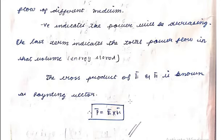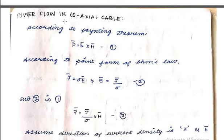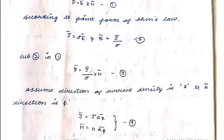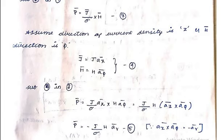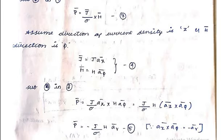The cross product E × H is known as the Poynting vector. The next topic related to Poynting's Theorem is power flow in a coaxial cable. According to Poynting's Theorem, P = E × H. To express E in terms of current density, we use the point form of Ohm's law: J = σE, giving E = J/σ. In a coaxial cable analyzed in cylindrical coordinates, the current density is along the z-direction and the magnetic field intensity varies with φ.